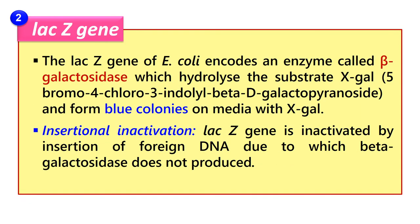Next is the LacZ gene. This gene is generally taken from E. coli and it encodes the enzyme beta-galactosidase. This enzyme can hydrolyze its substrate, X-GAL, which is 5-bromo-4-chloro-3-indolyl-beta-D-galactopyranoside. Beta-galactosidase hydrolyzes X-GAL and ultimately forms blue color colonies on the media containing X-GAL. Upon hydrolyzing this X-GAL substrate, the bacteria will make blue colonies, and this is due to the presence of the LacZ gene in those bacteria. So this LacZ gene can act as a reporter gene.